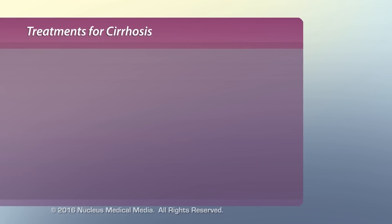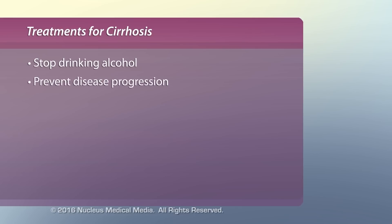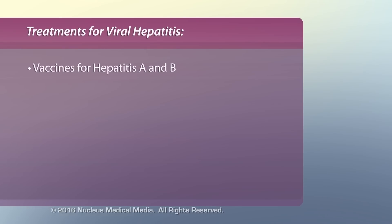Cirrhosis is not reversible, so treatment focuses on cessation of alcohol consumption, prevention of disease progression, and treatment of complications. The only definitive treatment for chronic liver disease is a liver transplant. There are vaccines to prevent infection with hepatitis A and B, but not C.